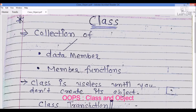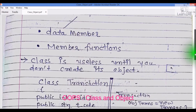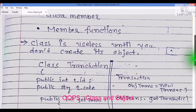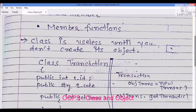Hello friends, in this video we will learn what is class and what is object. A class is a collection of data members and member functions. A class is useless until you create its object.